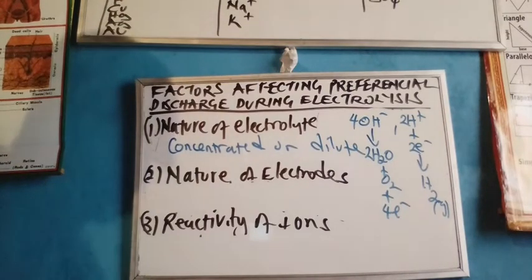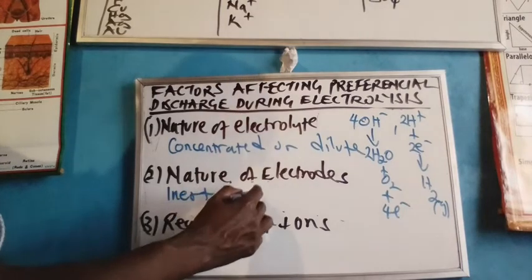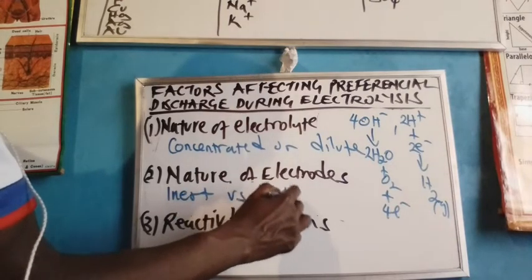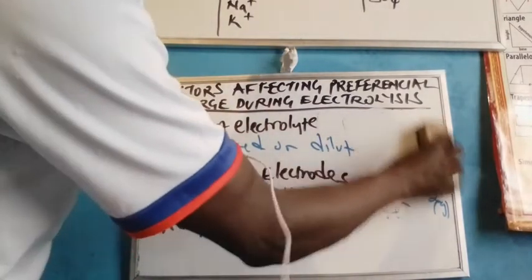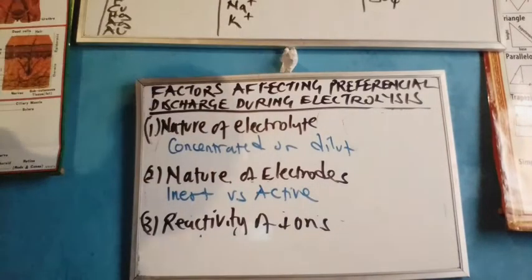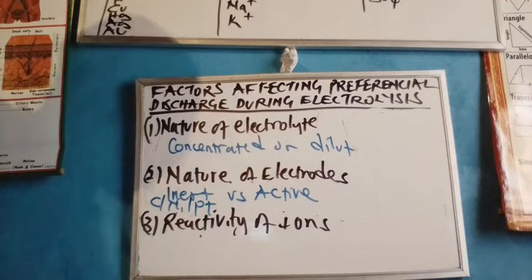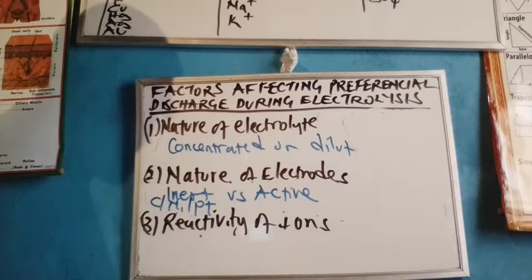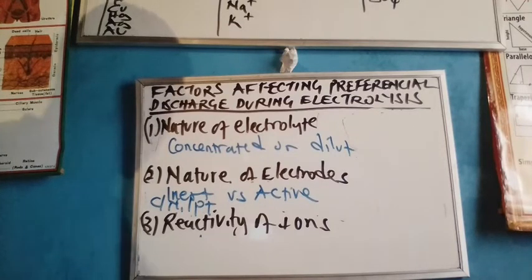Number two: nature of electrodes. The nature of electrodes are two — we have inert electrodes and we have active electrodes. The inert electrode is the unreactive form of electrode, for example carbon, nickel, and platinum. An inert electrode does not in any way interfere with the preferential discharge of ions during electrolysis, simply because they are unreactive.